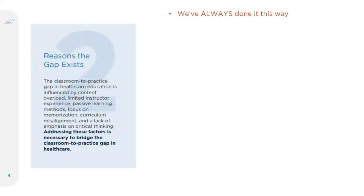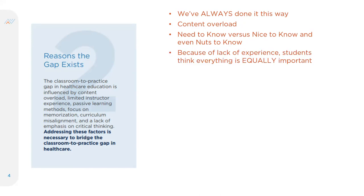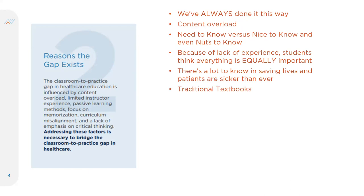What we typically see when there is a gap is: learners do not know what is important — they learned everything was important. Learners do not use active learning to practice skills, and learners are ultimately unable to perform those skills when it is necessary. Why does this gap exist? One — we need to change. We've always done it this way. Content overload: there's a lot to learn in saving lives. Everything is included often in our textbooks, and because there's a lack of experience, students think everything is equally important.